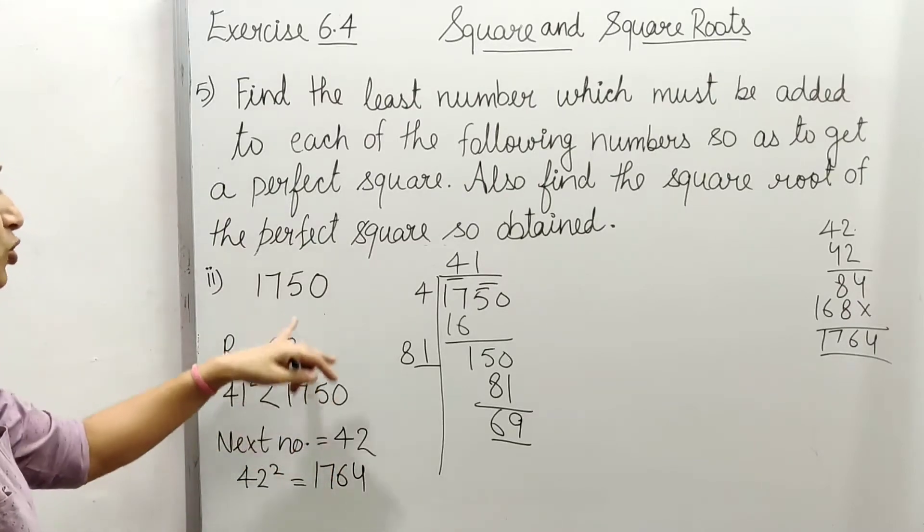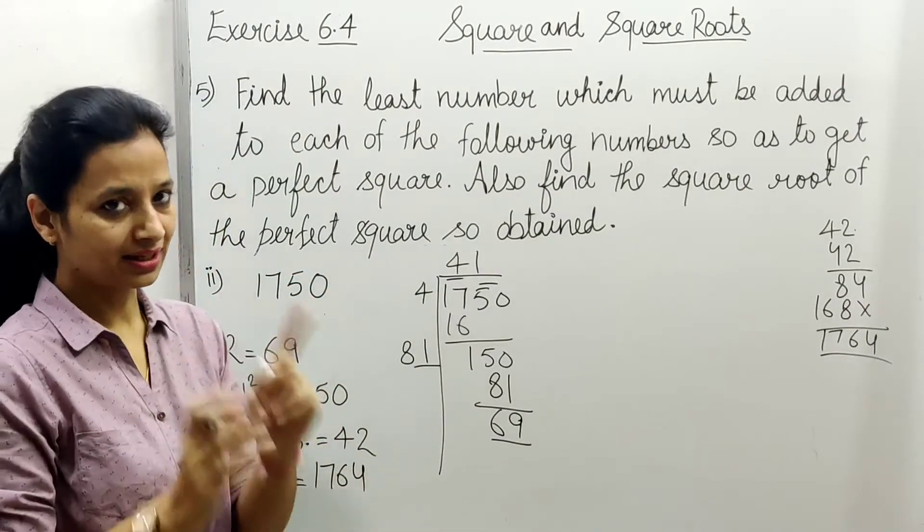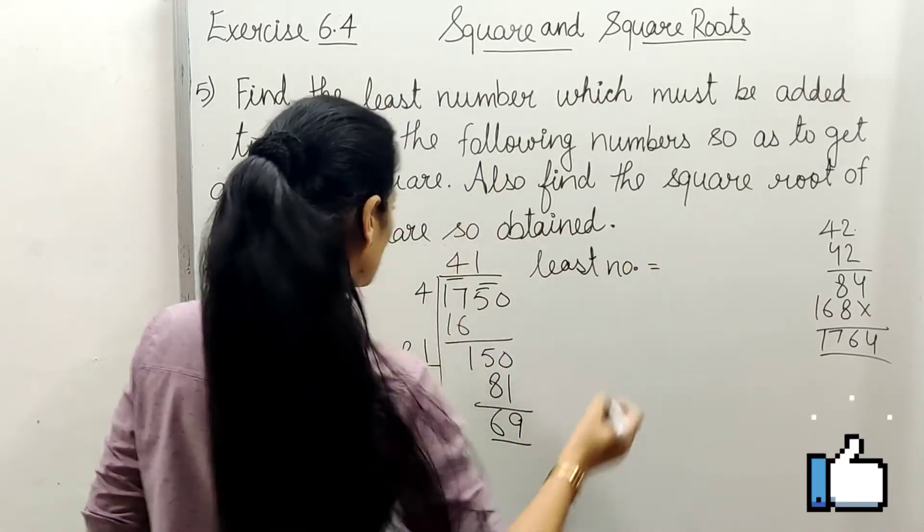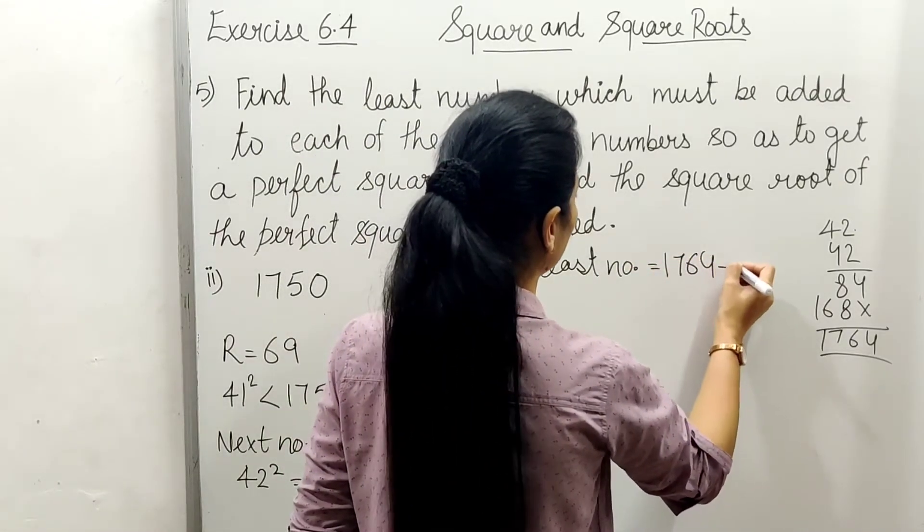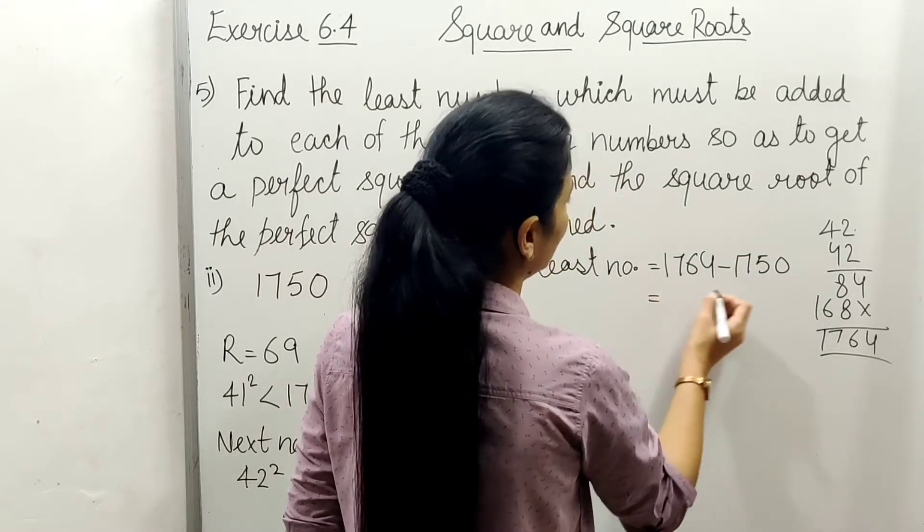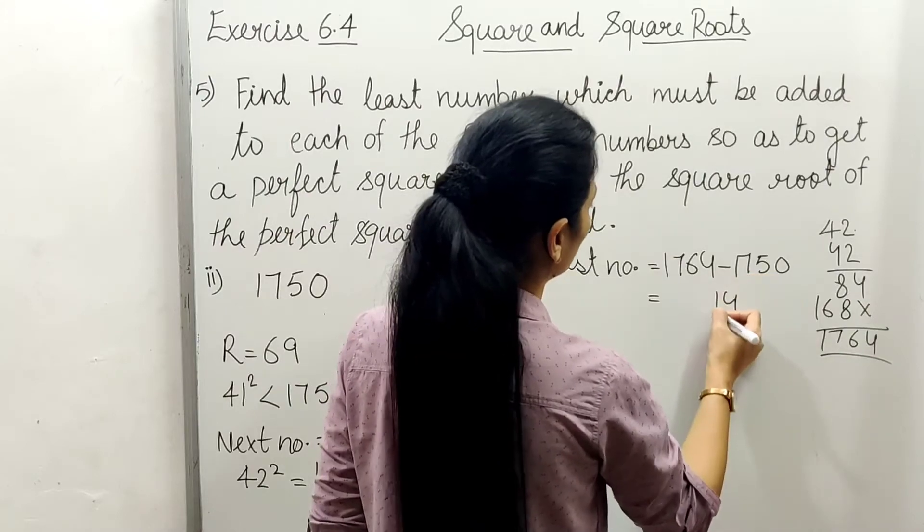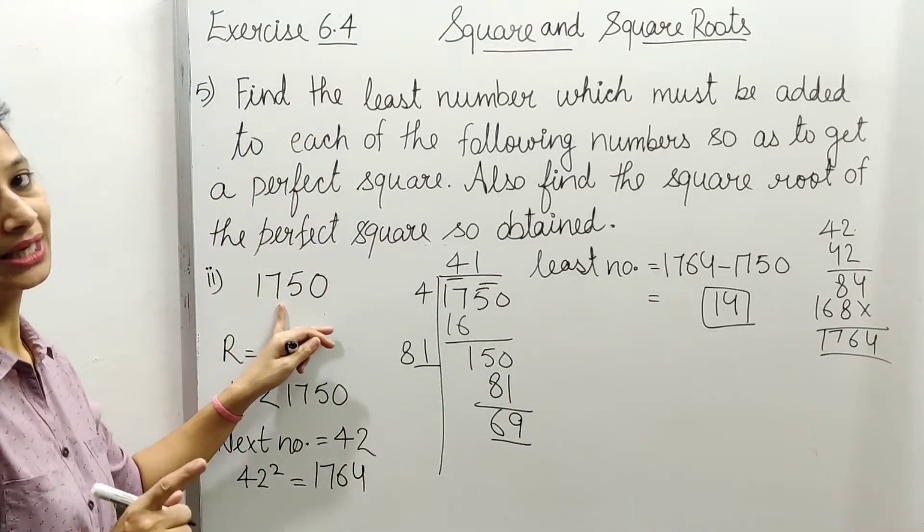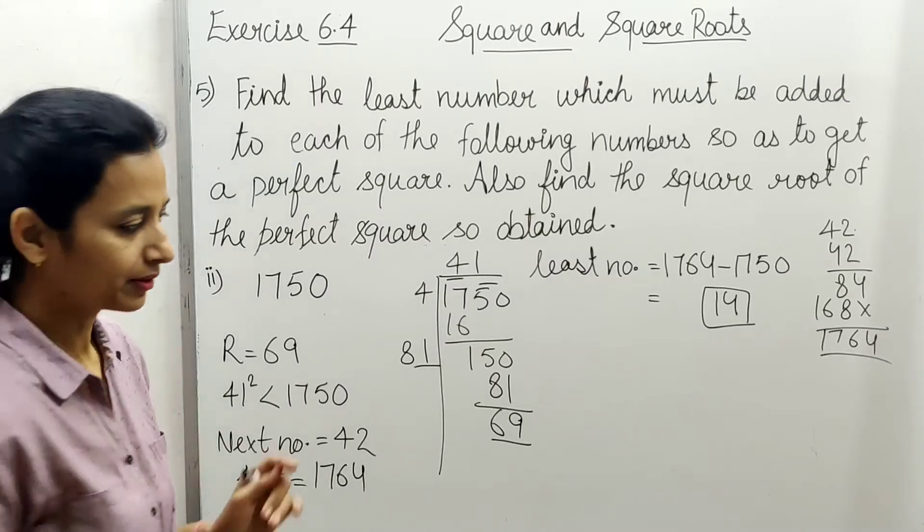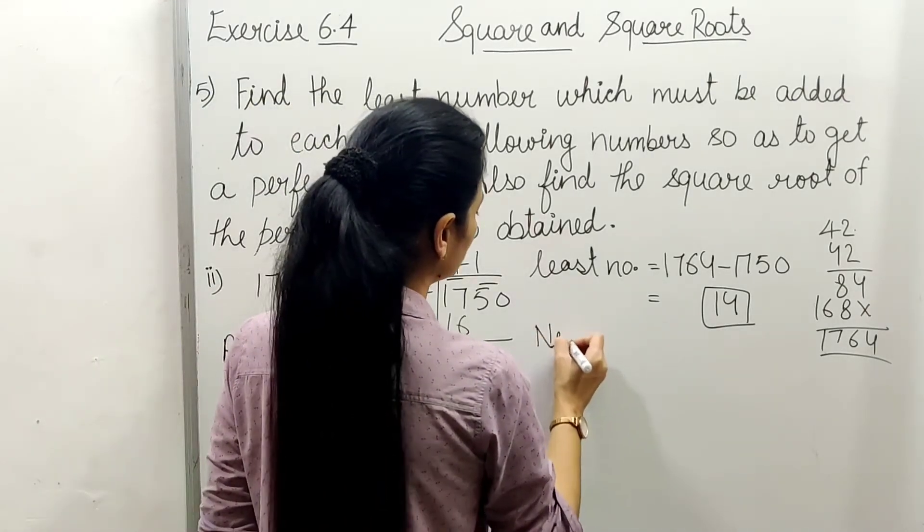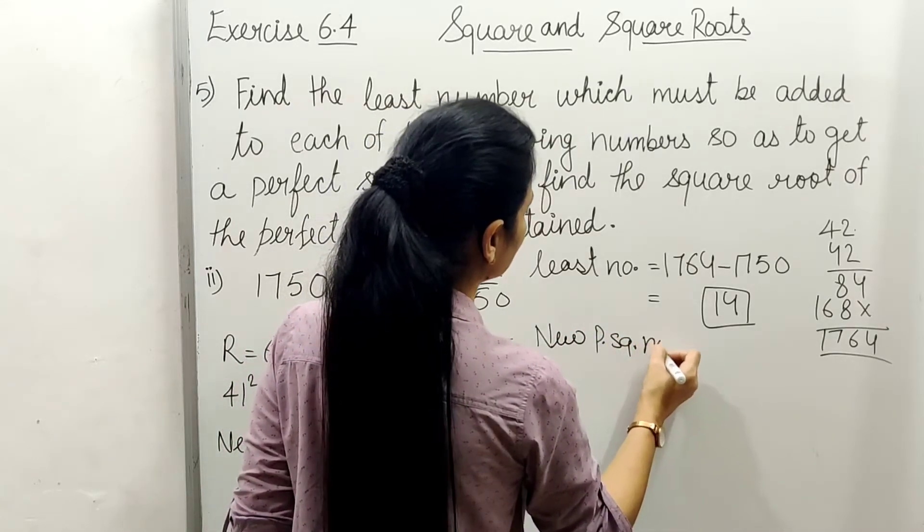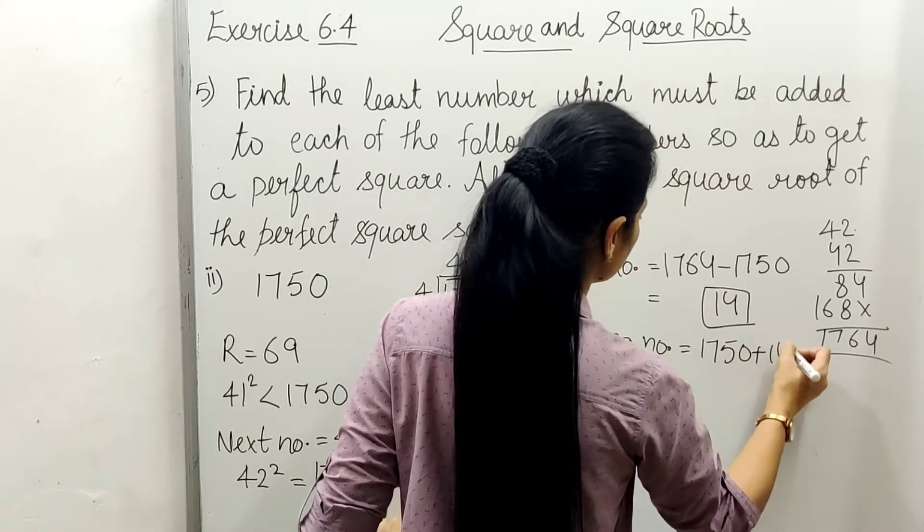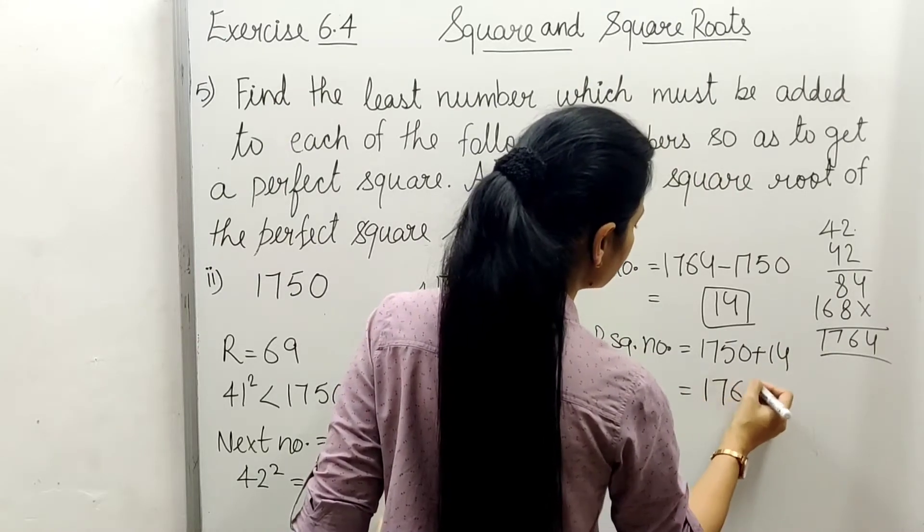Now if we minus the given number from this, we'll get the least number. Least number equals 1764 minus 1750, and it will be 14. This means if we add 14 to it, we'll get a perfect square. So the new perfect square number equals 1750+14=1764.